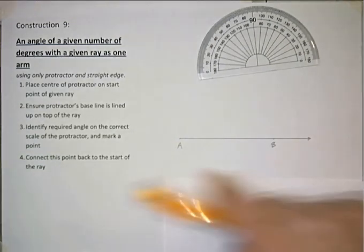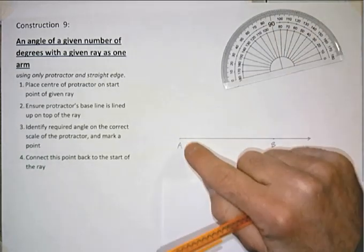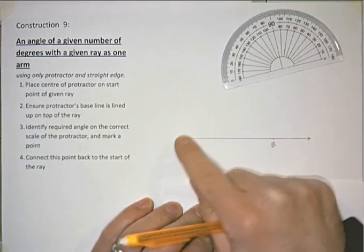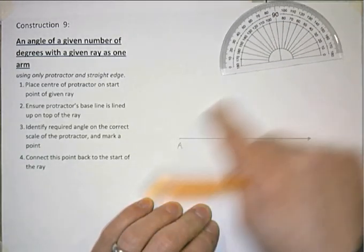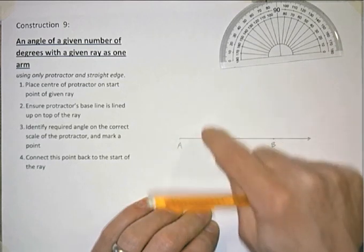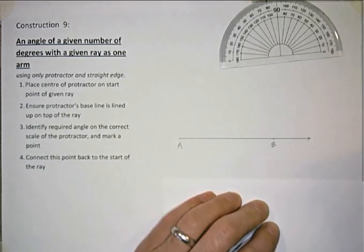So I have my given ray and what I want to do is construct an angle at point A with a line drawn at an angle such that that angle is as described. So we're going to do 50 degrees as an angle.